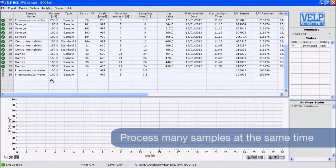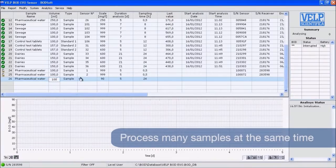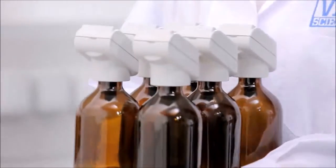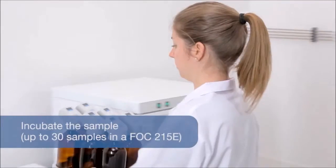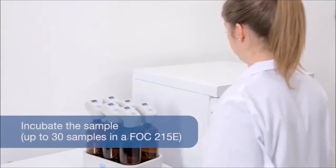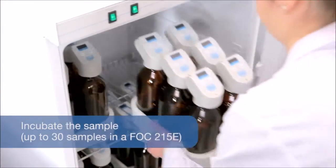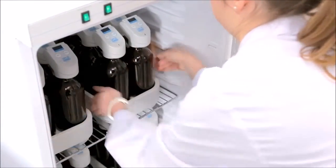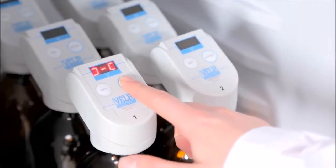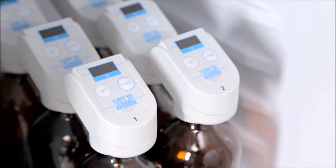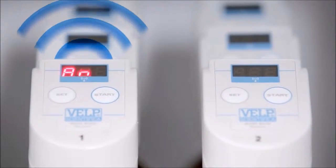Once having programmed the sensor through the BOD Soft, the samples need to be incubated and gently stirred. Up to six bottles can be loaded into the VELP Stirring Station with maximum convenience and simple handling. The extremely compact stirring station ensures constant stirring, remaining cold even after continuous use.